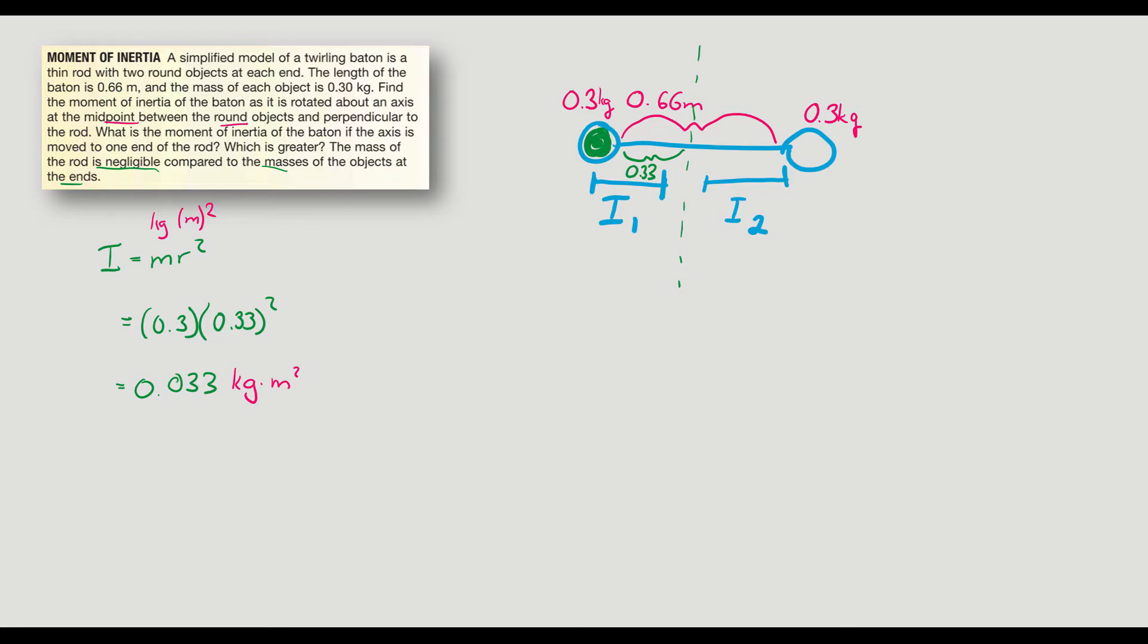And then now we can calculate our second one, which is just going to be the double of this. So let's multiply by two. We get 0.066. Multiply by two again, because I have to calculate the moment of inertia of both those objects. So the inertia is 0.066 kilograms meters squared.